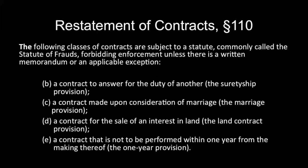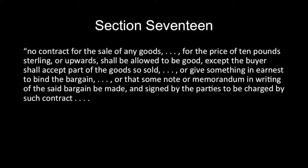Section 4 has been widely imitated since then, and as the Restatement Second of Contracts Section 110 makes clear, you can see here basically the same provisions appearing almost word-for-word. Section 17 of this 1677 statute of frauds governed the sale of goods. It provided that no contract for the sale of any goods for the price of 10 pounds sterling or upwards shall be allowed to be good except the buyer shall accept part of the goods sold, or give something in earnest to bind the bargain, or that some note or memorandum in writing of said bargain be made and signed by the parties to be charged by such contract.